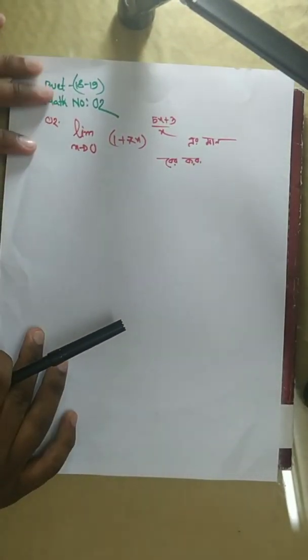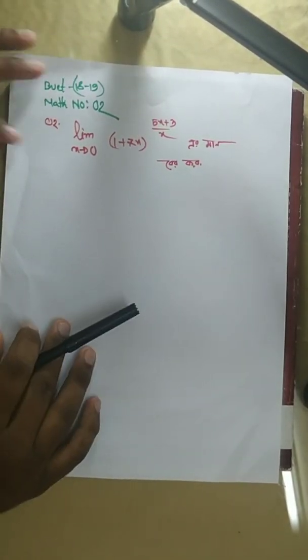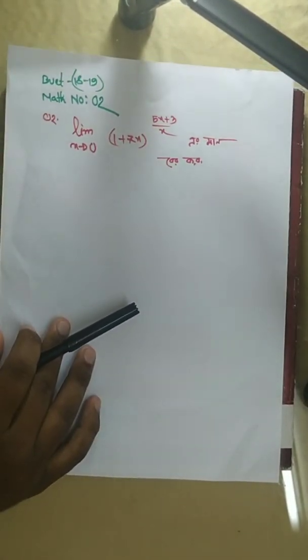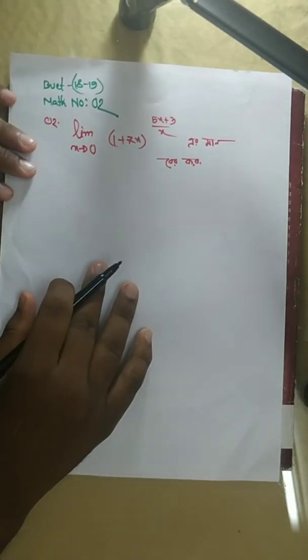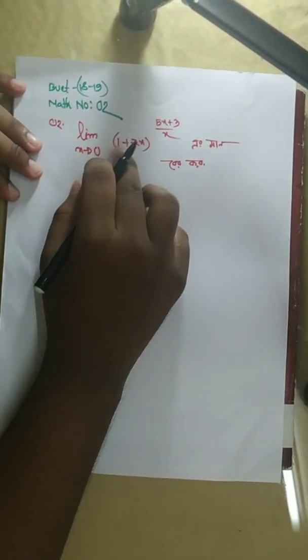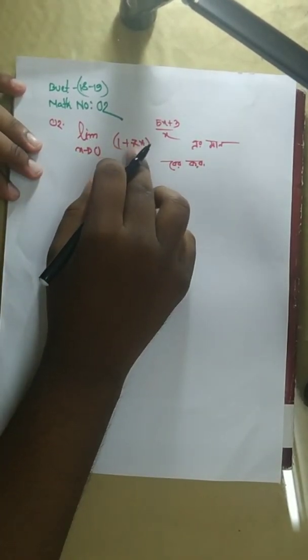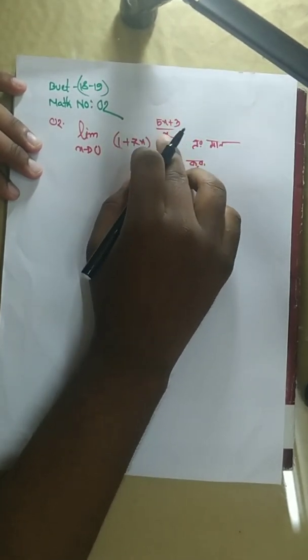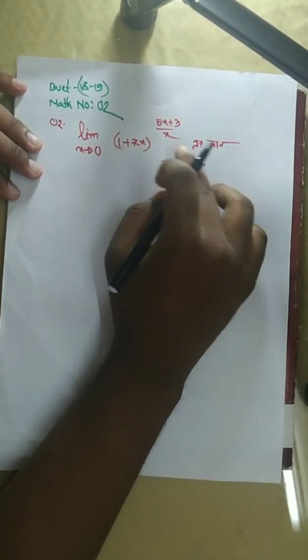We are going to take a look at two numbers of math. We are going to evaluate the limit as x tends to 0 of 1 plus 7x to the power of (5x plus 3) divided by x.